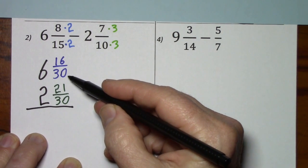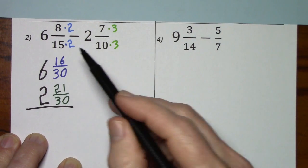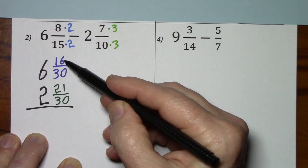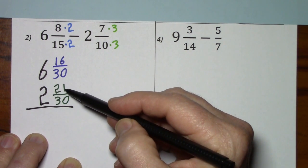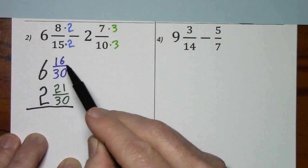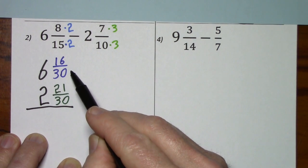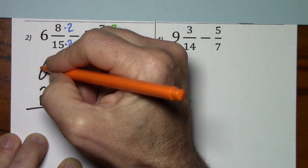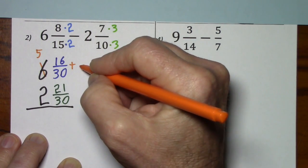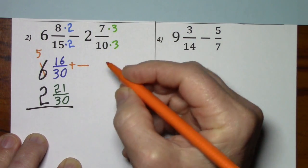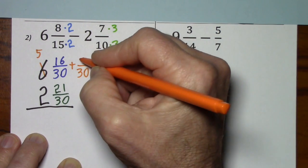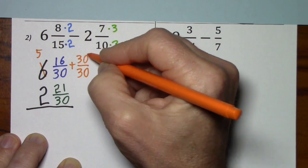So, we would keep the denominator of 30. The signs are different, we are going to subtract. The larger number is on top, but if I have 16, I can't take away 21. This means I'll need to borrow 1 from the 6 and add it to 16 thirtieths. So, 6 becomes 5 and I add a 1. Need common denominators when you add. So, we want a denominator of 30. That means we have to have a numerator of 30.